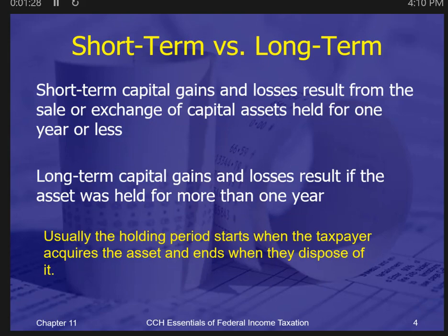How does this affect the taxpayer? Short-term capital gains — harking back to our last chapter where we talked about how to calculate gain or loss on assets sold — now we're talking about the time frame we hold the asset. Short-term capital gains come from sales of capital assets held for one year or less; longer than one year is long-term. The holding period starts when a taxpayer acquires the asset and ends when they dispose of it.